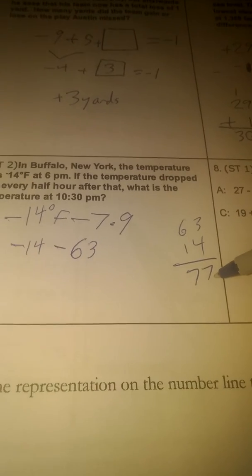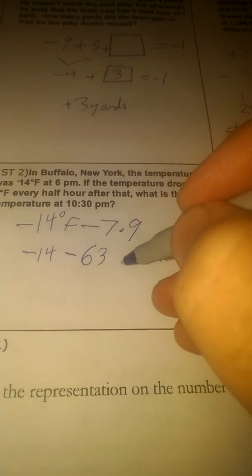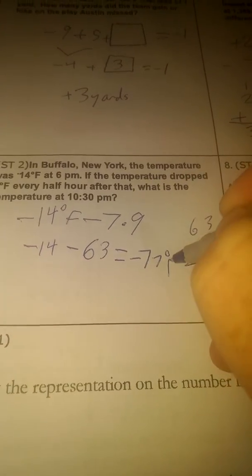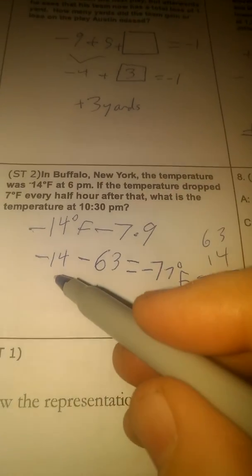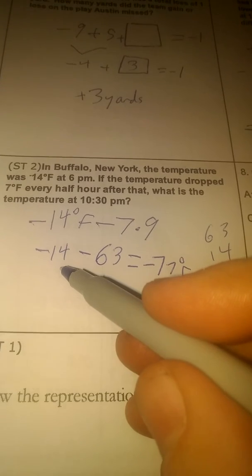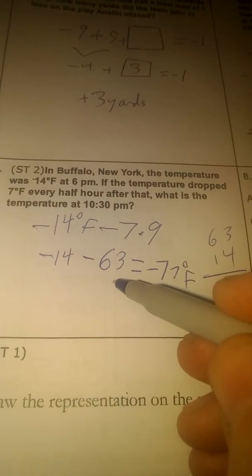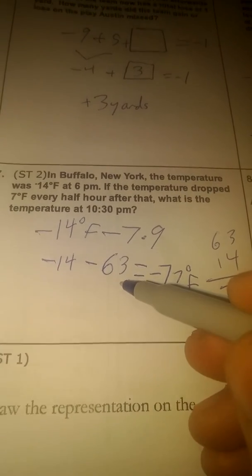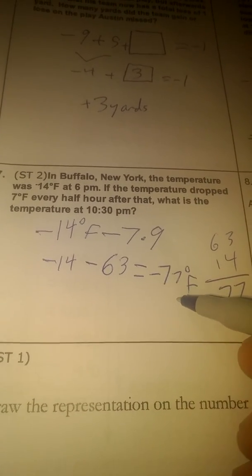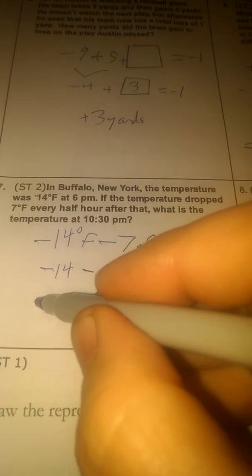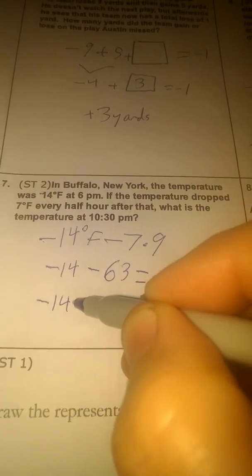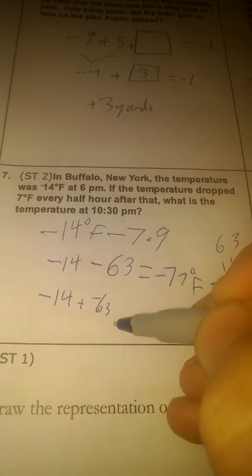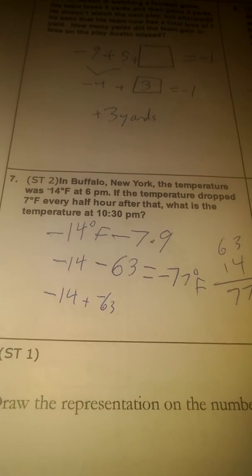Another way to think of it is we're already starting at negative 14. We're going to go 63 more negative. So negative 14 and another 63 negatives is going to get us a total of 77 negatives, because this could be written as negative 14 plus negative 63, which is also negative 77 Fahrenheit.